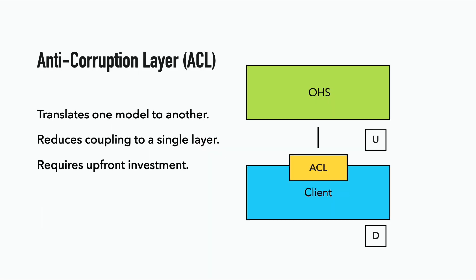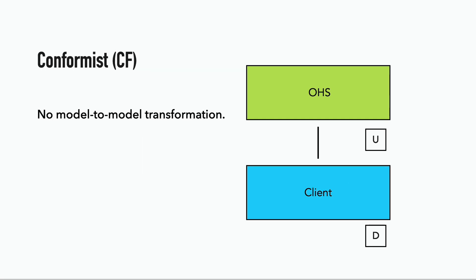Implementing an anti-corruption layer does require time and effort, because you have to write your application in a particular way and put those abstraction layers in place ahead of time. But sometimes you can't afford to do that, and that's when you will see the conformist pattern, where the downstream system just uses the upstream model directly. This has higher coupling but is simpler, and gives you higher velocity in the short term. It can be a useful tactical move if done intentionally, with a plan to eventually pay back the technical debt.